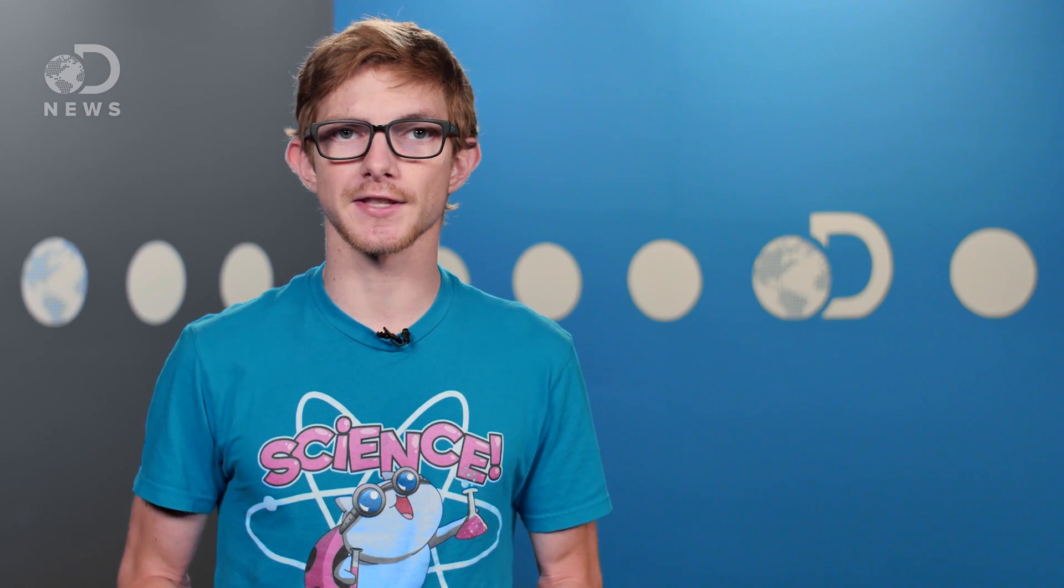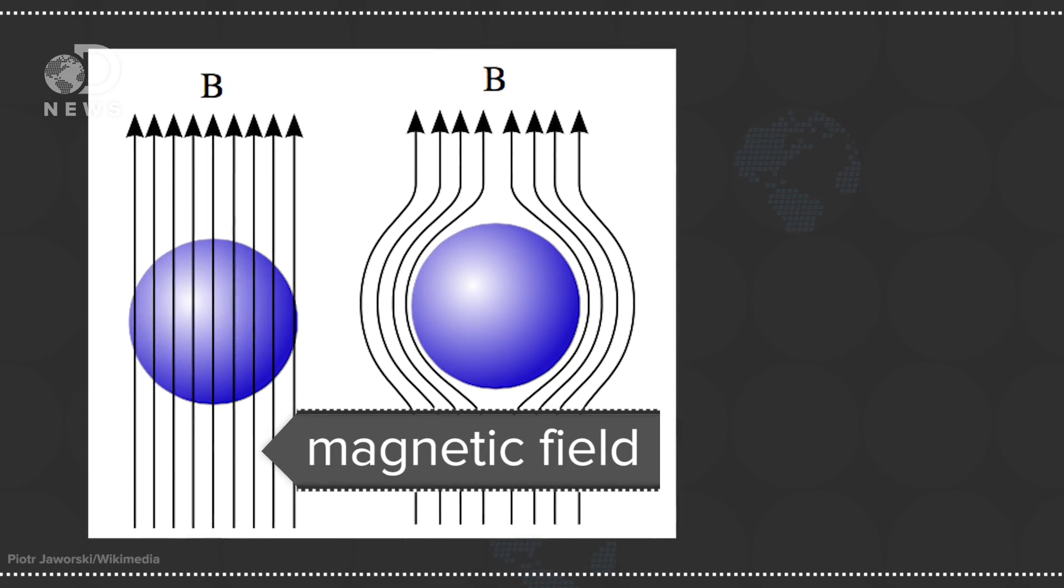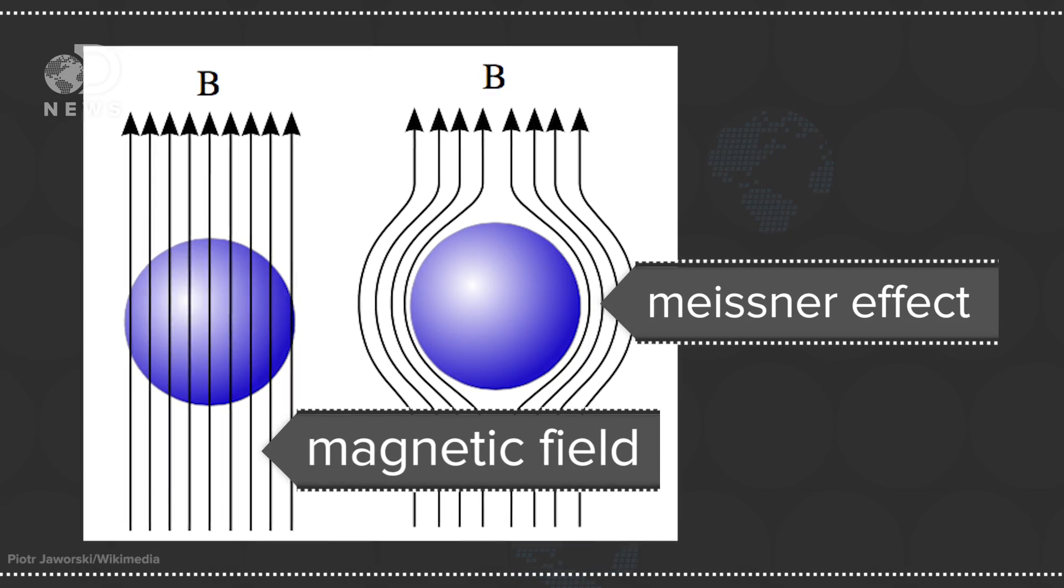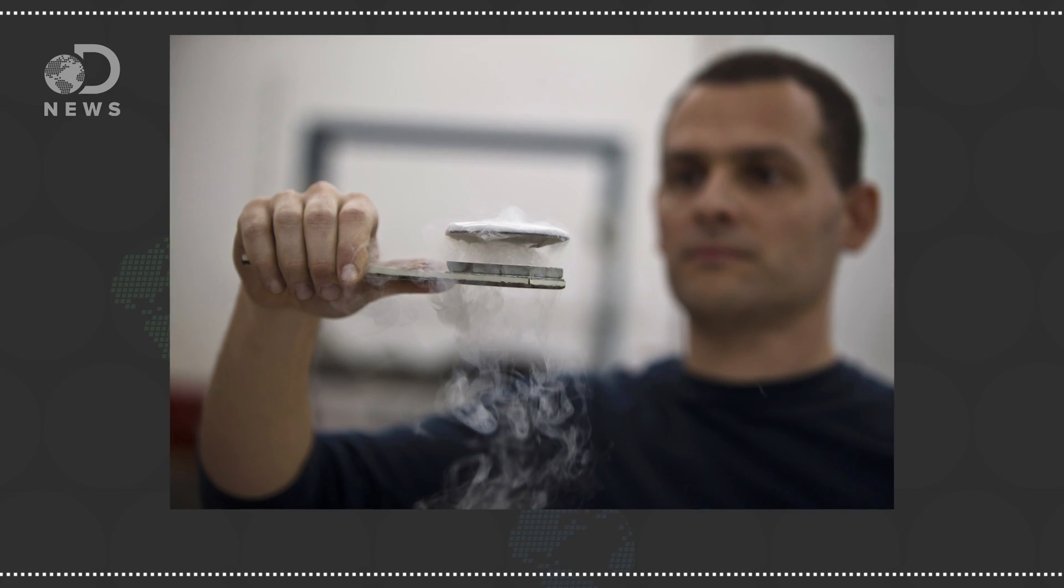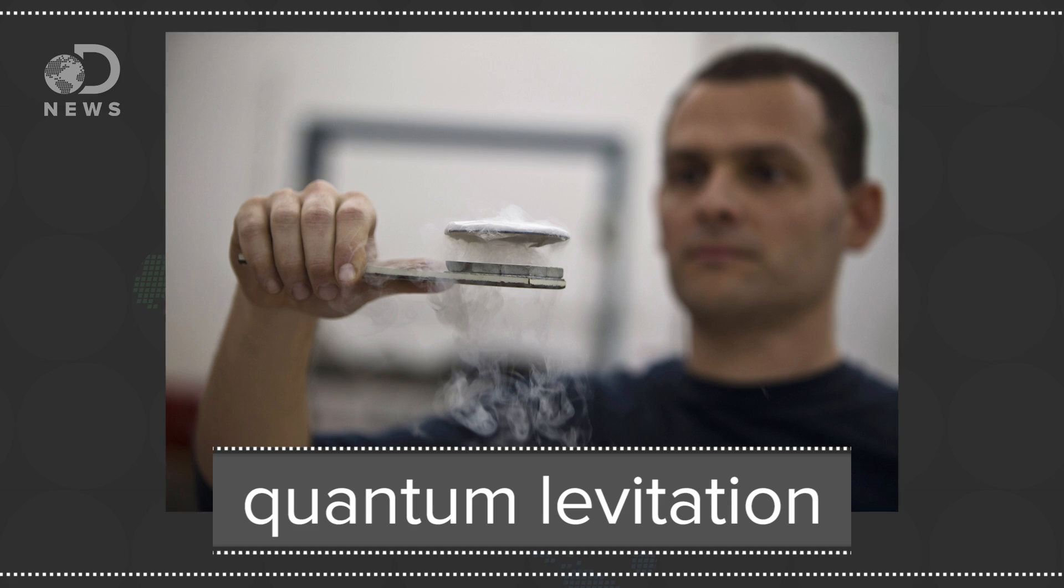They create currents on the surface that screen the superconductor from magnetic fields. As you cool a superconductor past its critical temperature, it expels magnetic fields, and this is called the Meissner effect. If you put a superconductor by a magnet, it will repel it. Put one above the other and it'll levitate. This is called quantum levitation.